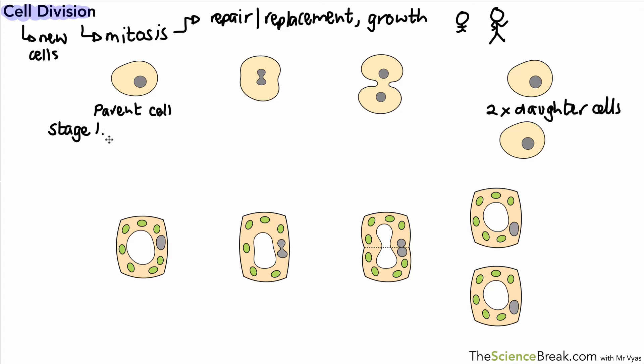We can split cell division into three stages. The first stage is very important because we get an increase in the number of sub-cellular structures. You may have heard these called organelles, which is fine. We get an increase in sub-cellular structures so that every new cell has enough.